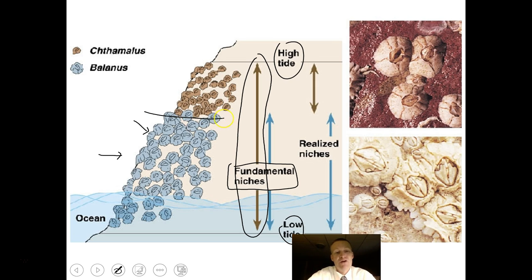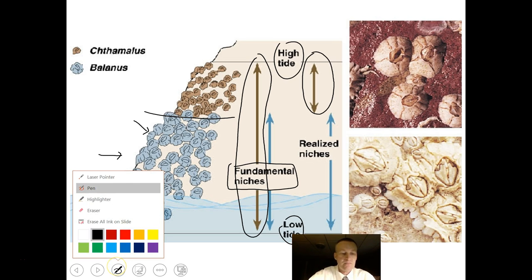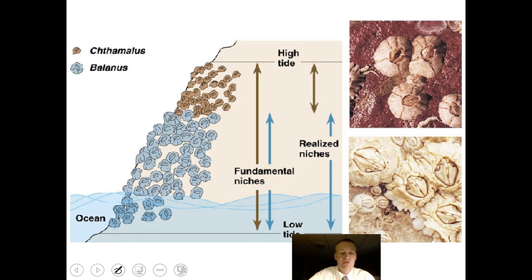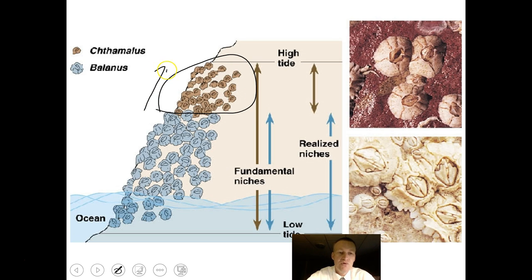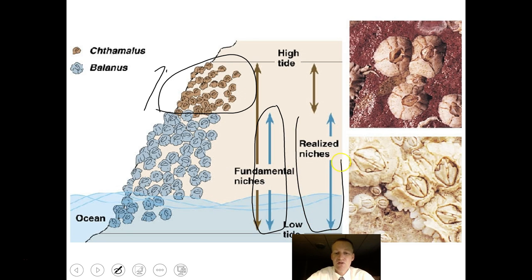Unfortunately for the brown barnacle, the blue barnacle is competing with it. So the realized niche — the niche it has to live in because of competition — is only the space from where the blue barnacle stops living to the high tide line. The reverse experiment was done: when the brown barnacle was removed, the blue barnacle would not move further up to the high tide line. The blue barnacle's fundamental niche is exactly where it's already living, making it a super competitor.